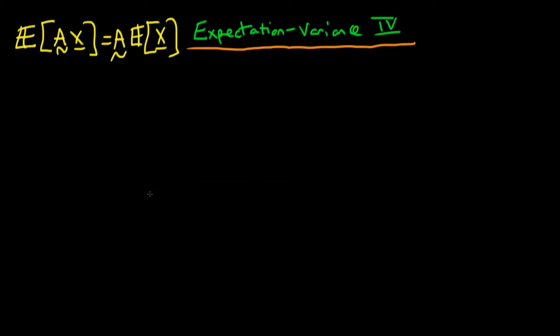In this video I want to prove what the variance of a constant matrix A times our random vector x is actually equal to.